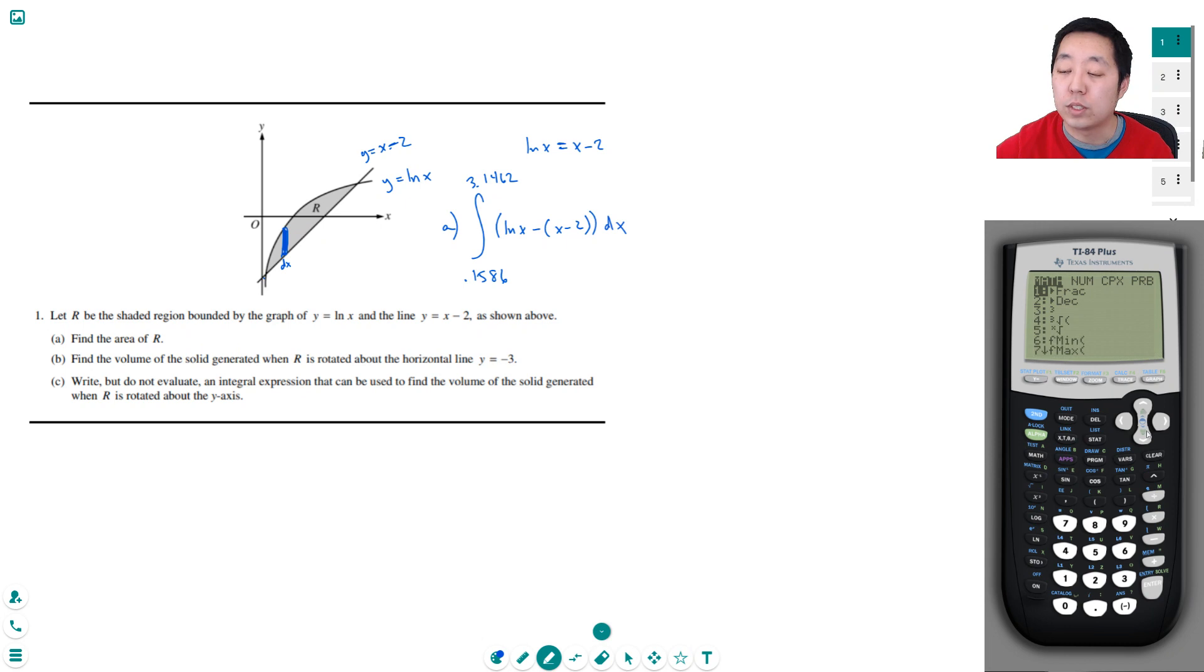For some reason I was in the graphing thing and apparently that made a difference. So ln x minus (x minus 2), integrate from 0.1586 all the way to 3.1462. This is equal to 1.949. We'll leave it at that.